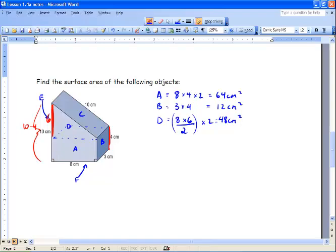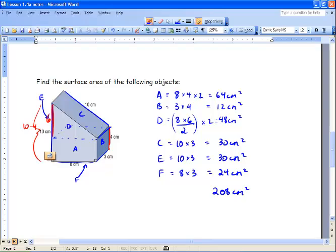So we've done A, B, D. I skipped C. Let's go back to C. And we know that it's 10 centimeters by 3 centimeters. And we only have one of them. So it's going to be 30 centimeters squared. Next, we've got to do E, which is our back. And we've got it's 10 by 3 as well. And we only have one of them. And then we've got to do F, which is our bottom, which is 8 times 3. And we only have one of them as well.